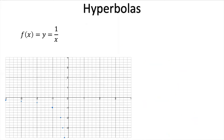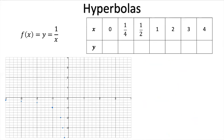Now let's see what happens if we use some positive values and zero, since previously we were only looking at negative values. Starting with 0: f(0) gives us 1 over 0. Some alarm bells should be ringing here — 1 divided by 0 is not 0, it is undefined, meaning that value doesn't exist. This is an interesting case we've never had before.